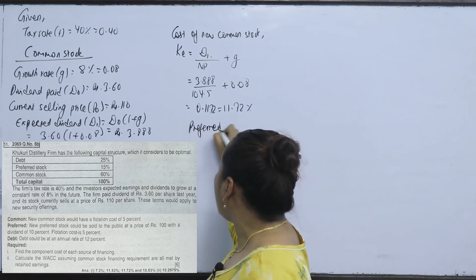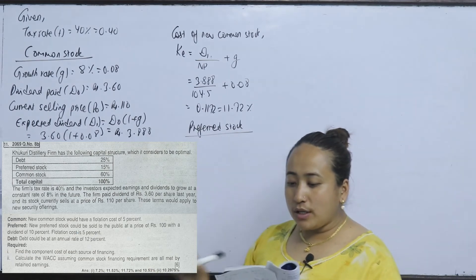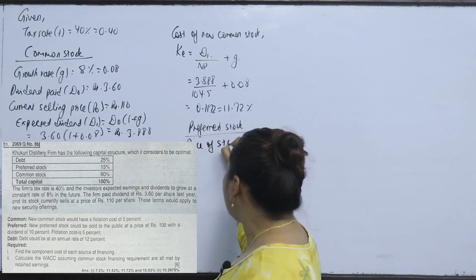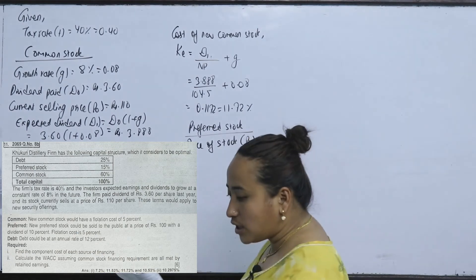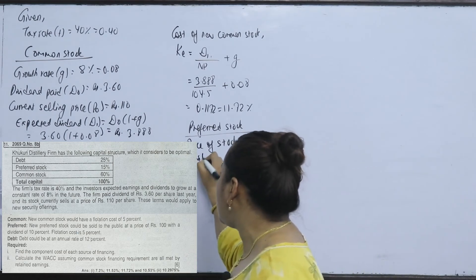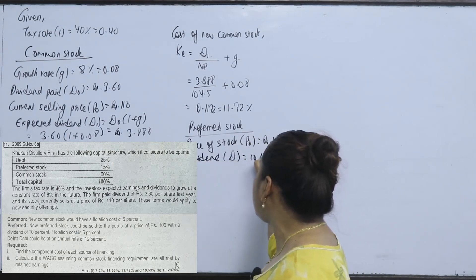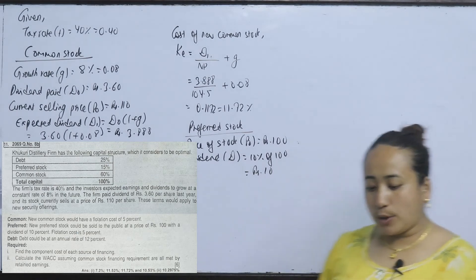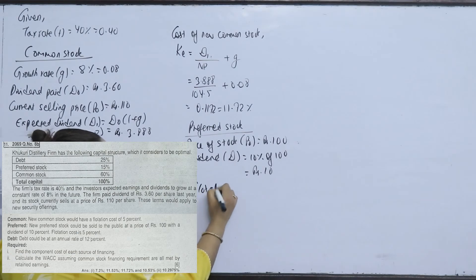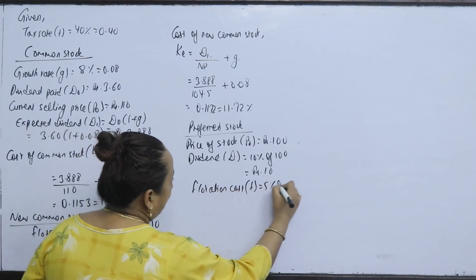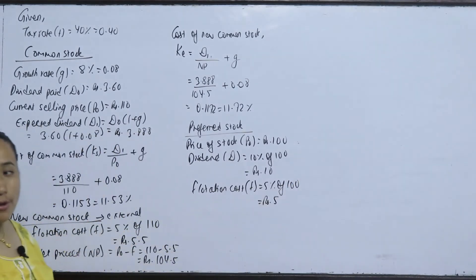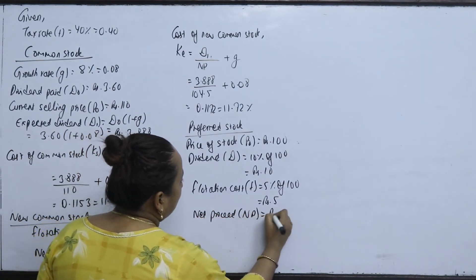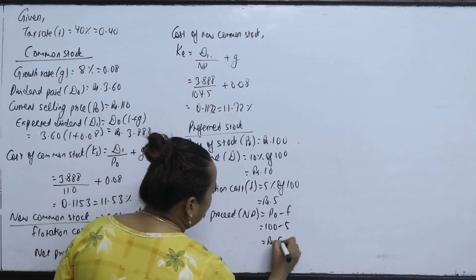Now we calculate the cost of new preferred stock. New preferred stock could be sold to the public at a price of Rs. 100 with a dividend of 10%, making the dividend Rs. 10. The flotation cost is 5%.